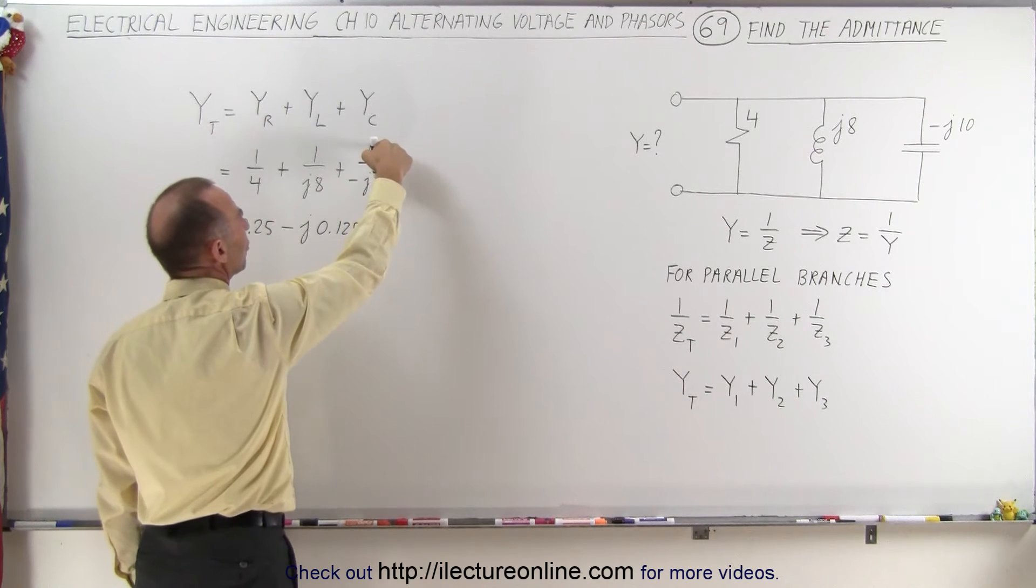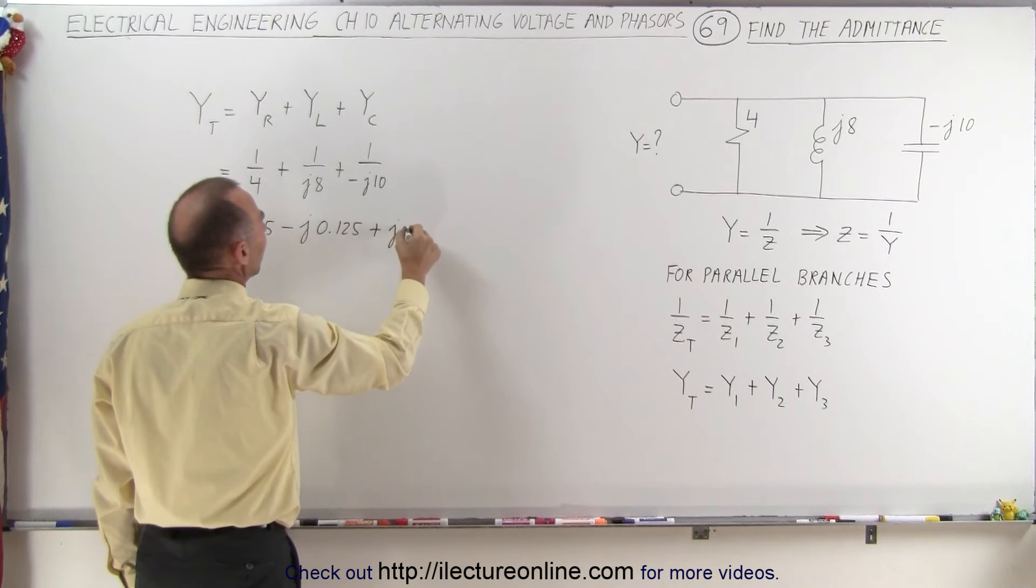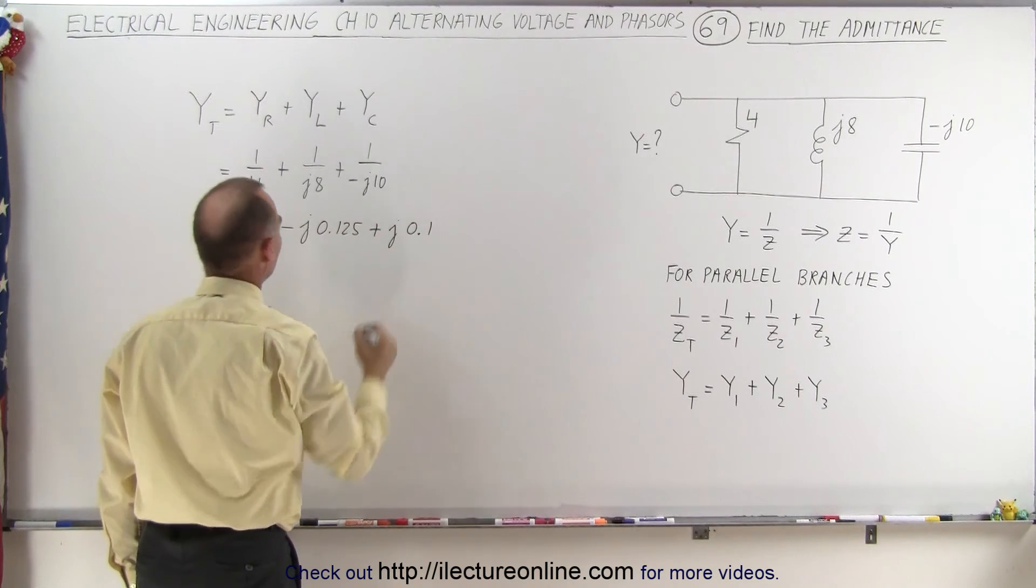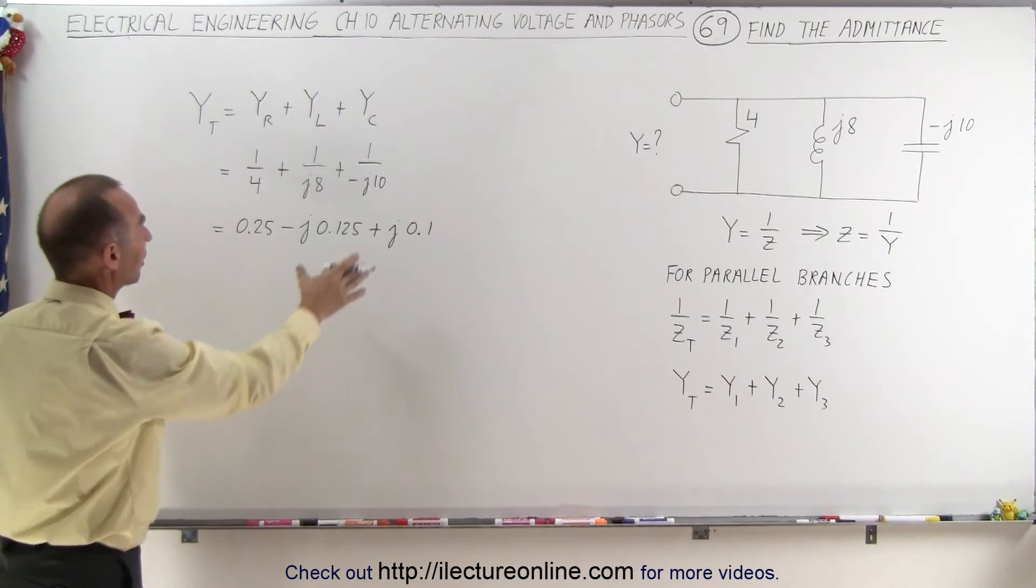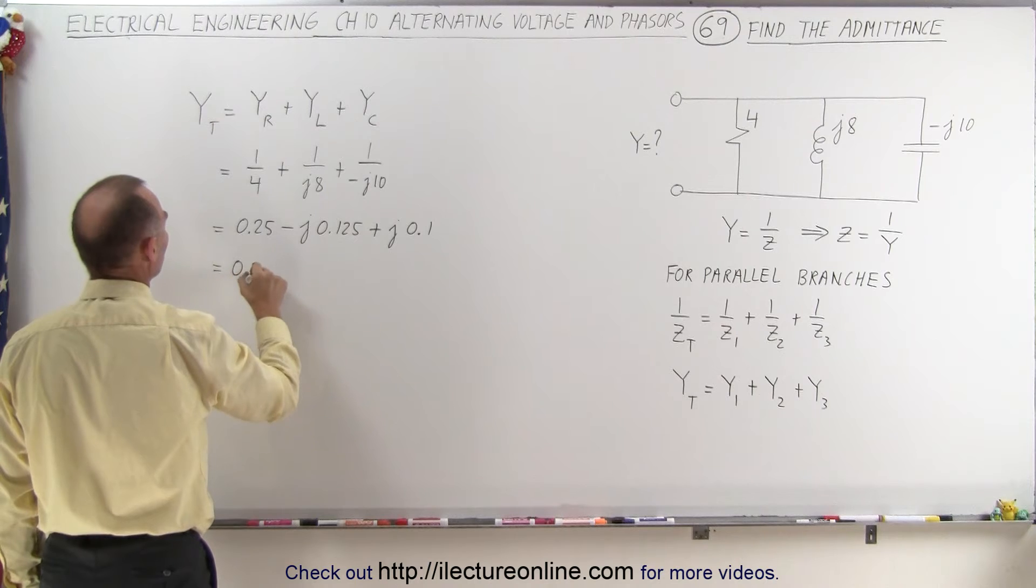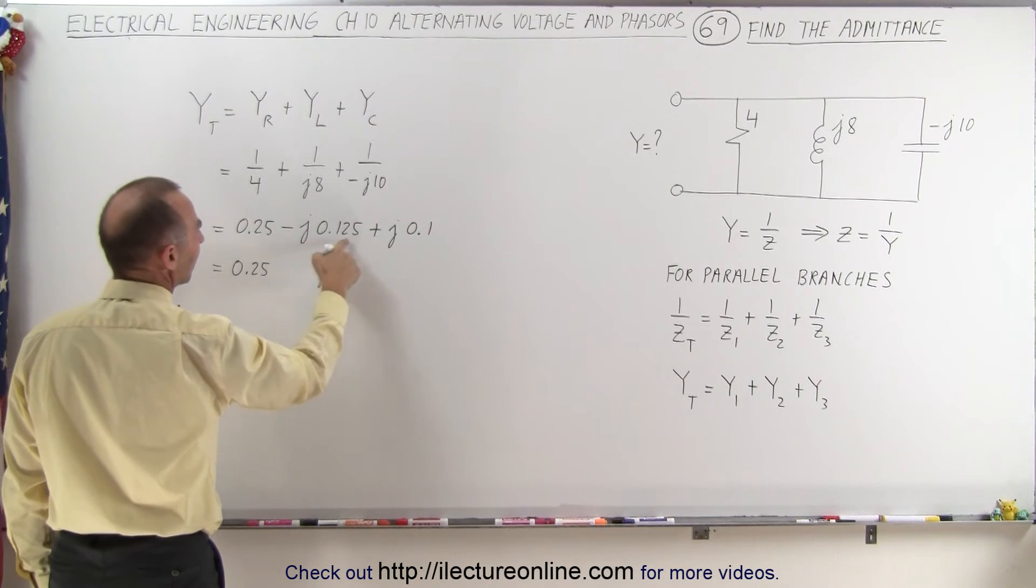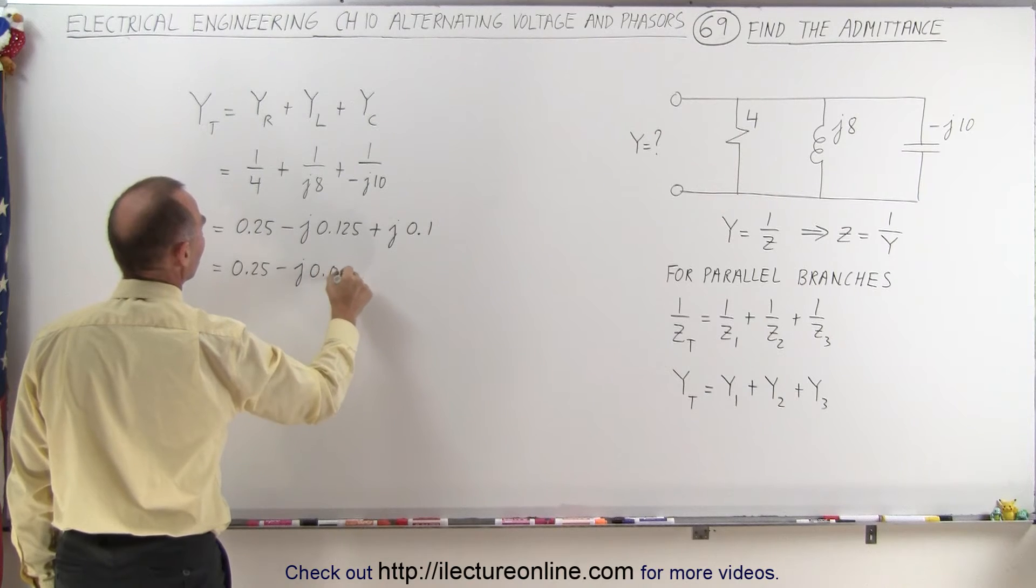And then here, when you bring the J to the numerator, it's minus, but times a minus, that becomes plus J times 0.1. So now this is the total admittance of the circuit. We can combine the two imaginary parts. So this is equal to 0.25, and that's bigger than that, so that would be minus J times 0.025.